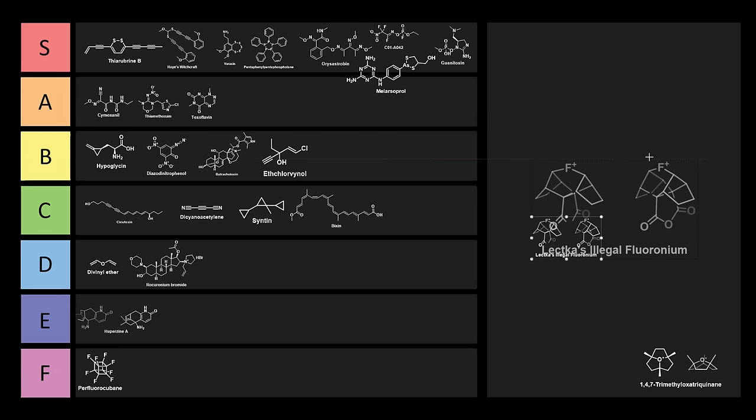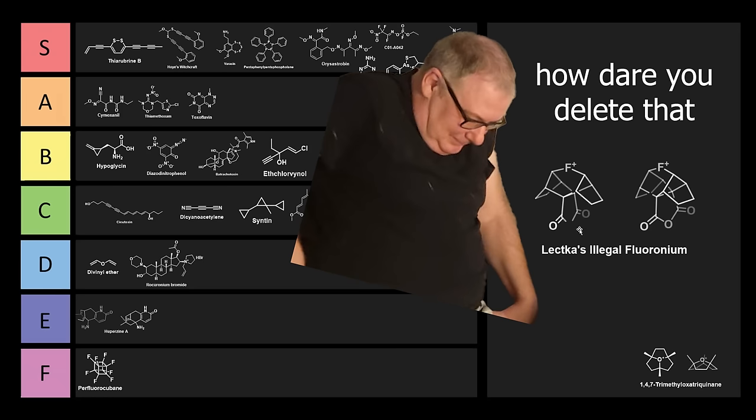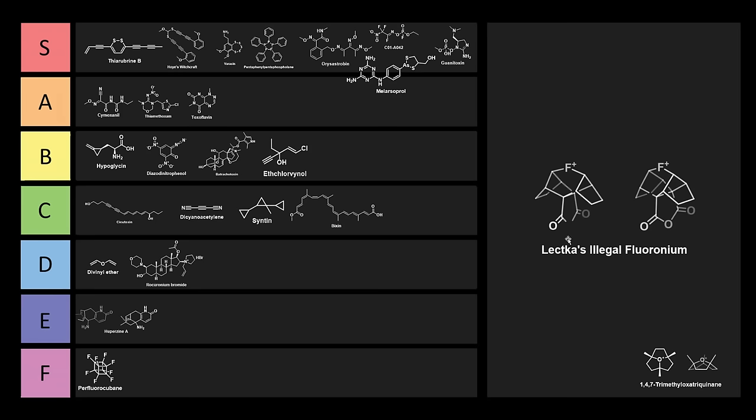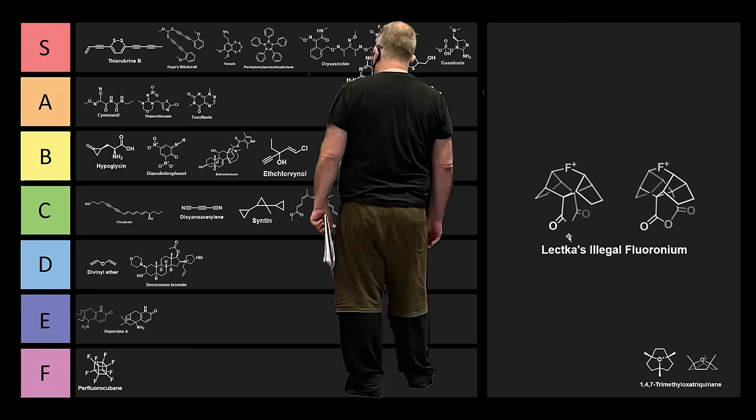Next, we have a personal favorite of mine. And if you're in the fluorine chemistry community, you might have seen this before. This is what I like to call Lectica's Illegal Fluoronium. There is supposed to be an oxygen on this left one. I've just rotated it slightly so you can see a bit more of the geometry. I think the fact that I accidentally deleted that oxygen makes it a little bit more illegal. And you might be wondering to yourself, why is this illegal? And who's Thomas Lectica?